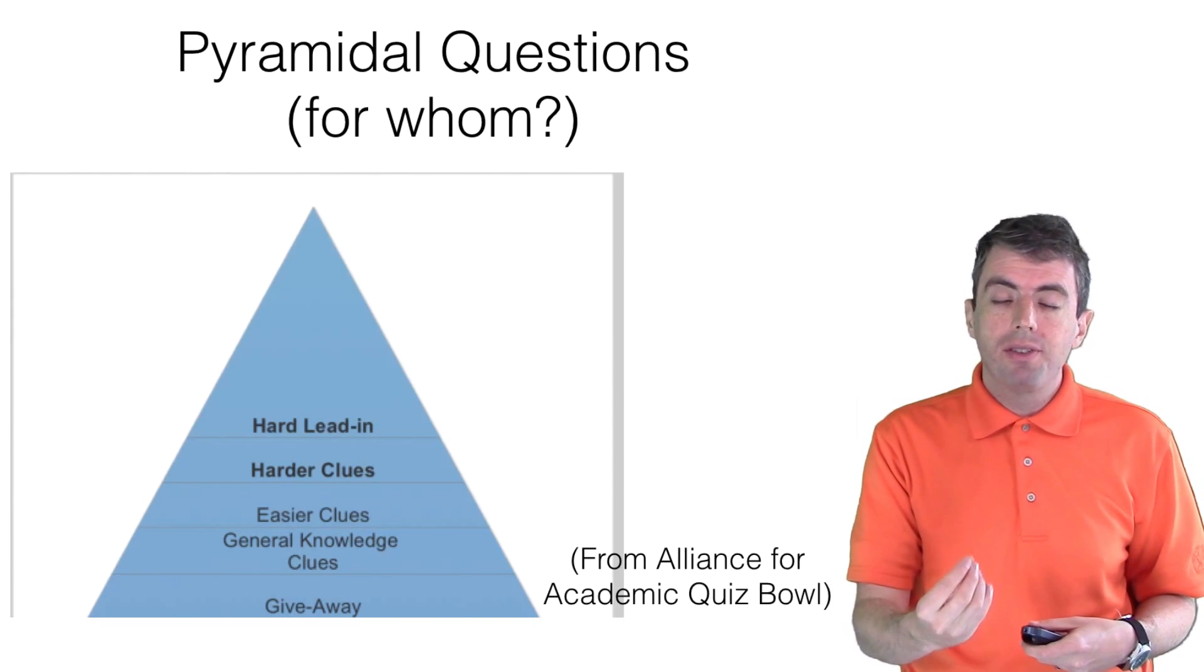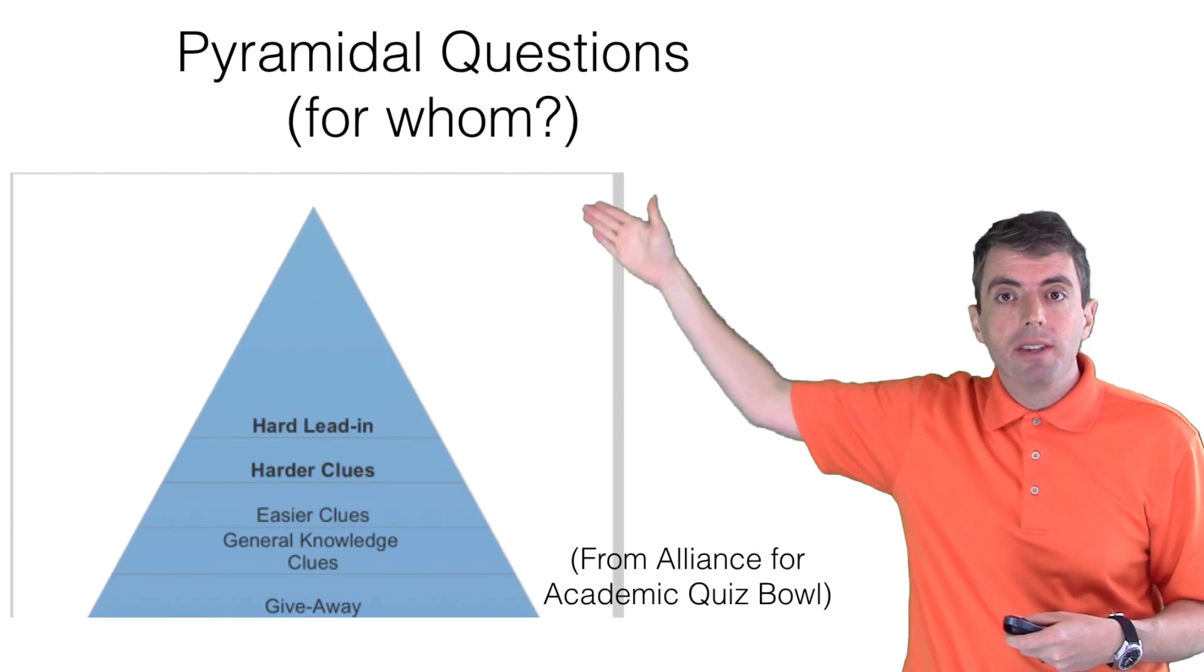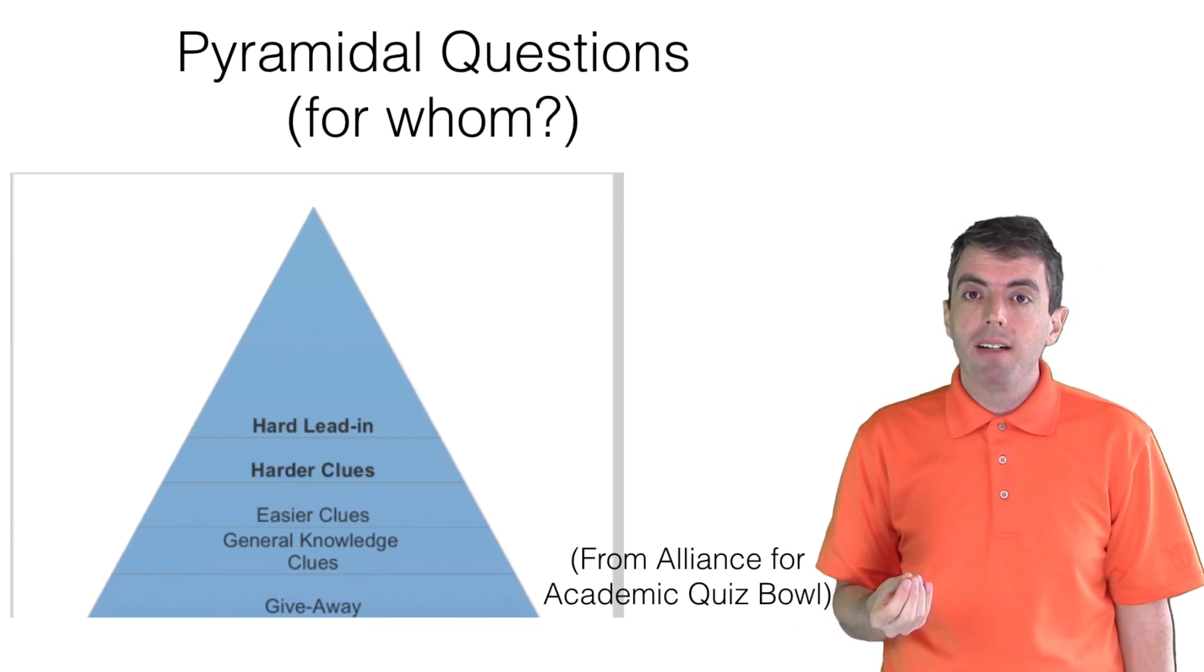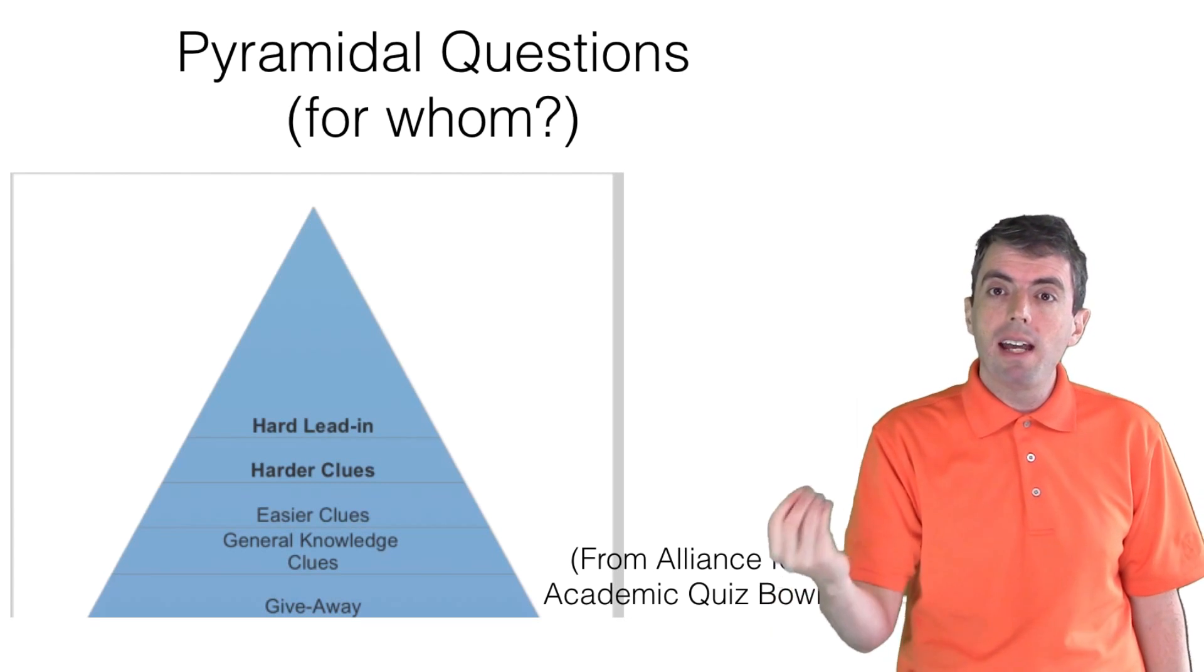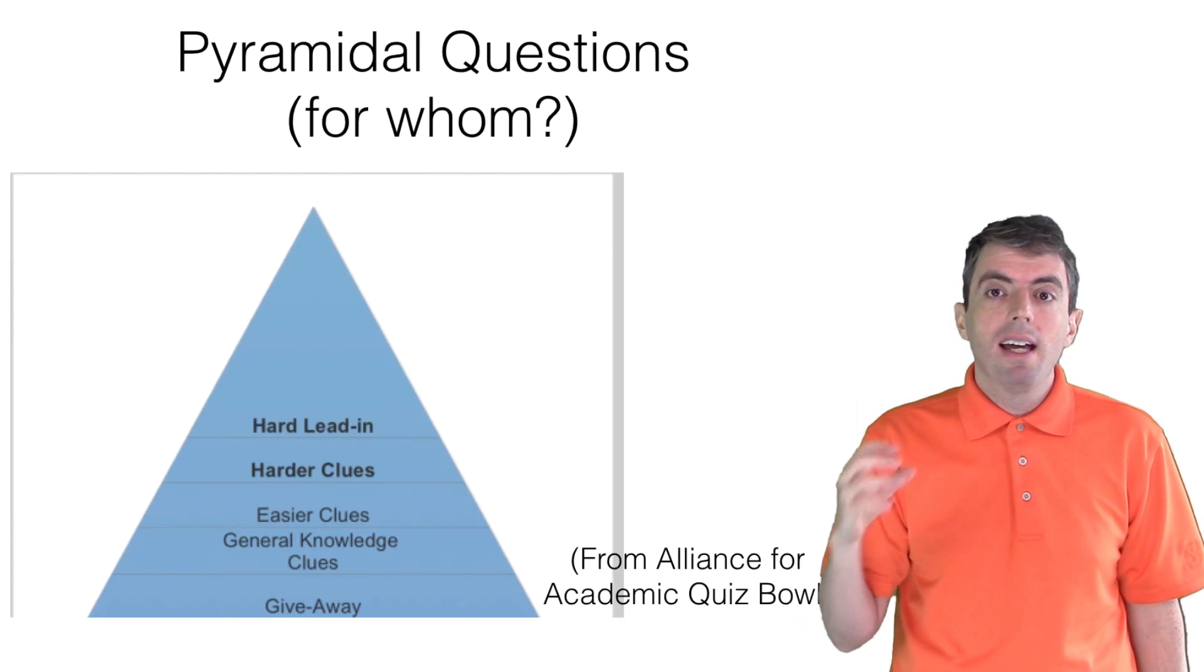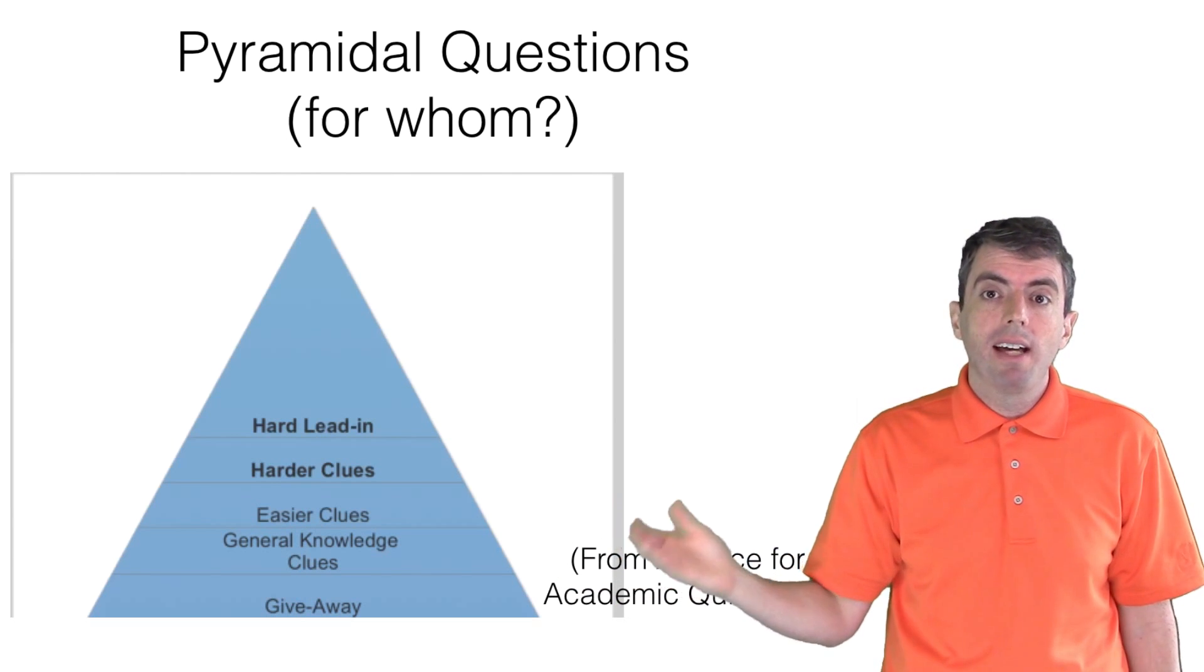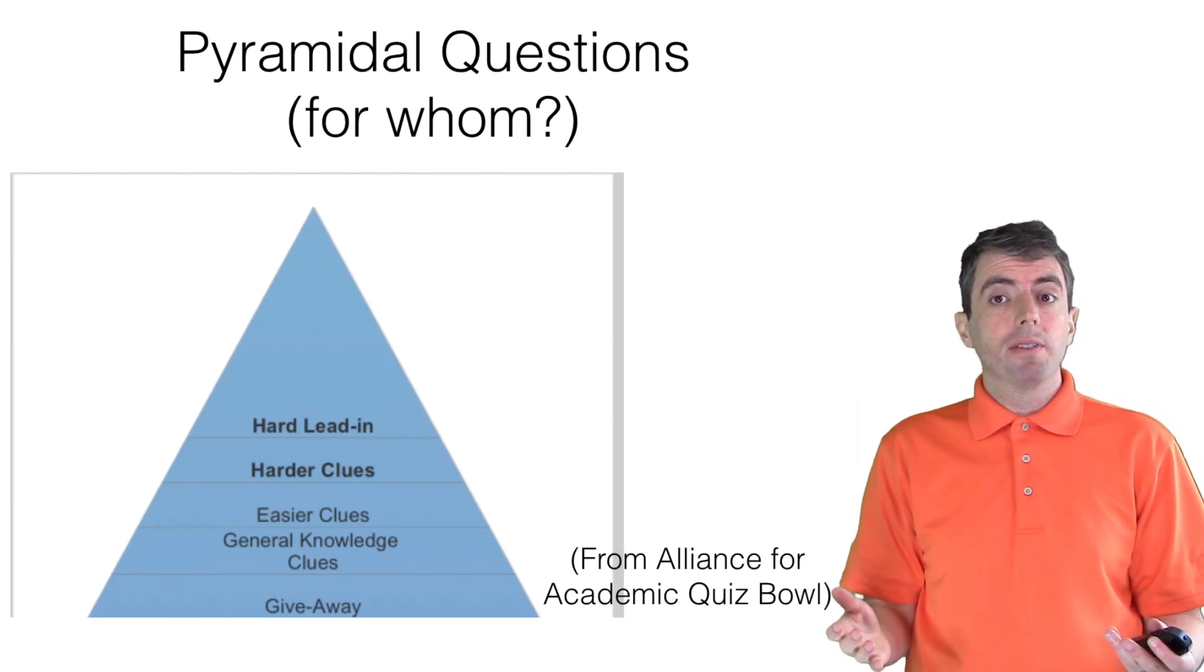And quiz bowl question writers write questions pyramidally. That is, they start with difficult clues and get easier as you go along through the question. Computers have near-infinite memory. And so it can memorize every quote, it can memorize every name in Wikipedia. And if there is an association between that quote, that name, or some other stock clue, and an answer, it can memorize that and get it right 100% of the time. This is far more difficult for a human.